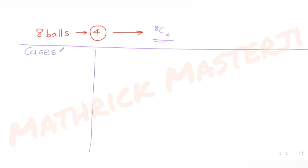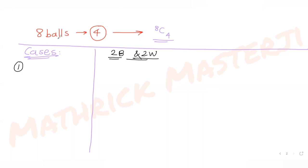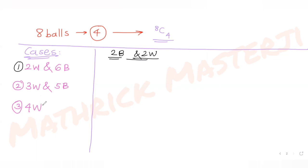Since we are drawing two black and two white balls, there must be at least two of each color in the bag. The remaining four balls give us five possible cases: Case 1 — two white and six black; Case 2 — three white and five black; Case 3 — four white and four black; Case 4 — five white and three black; Case 5 — six white and two black.